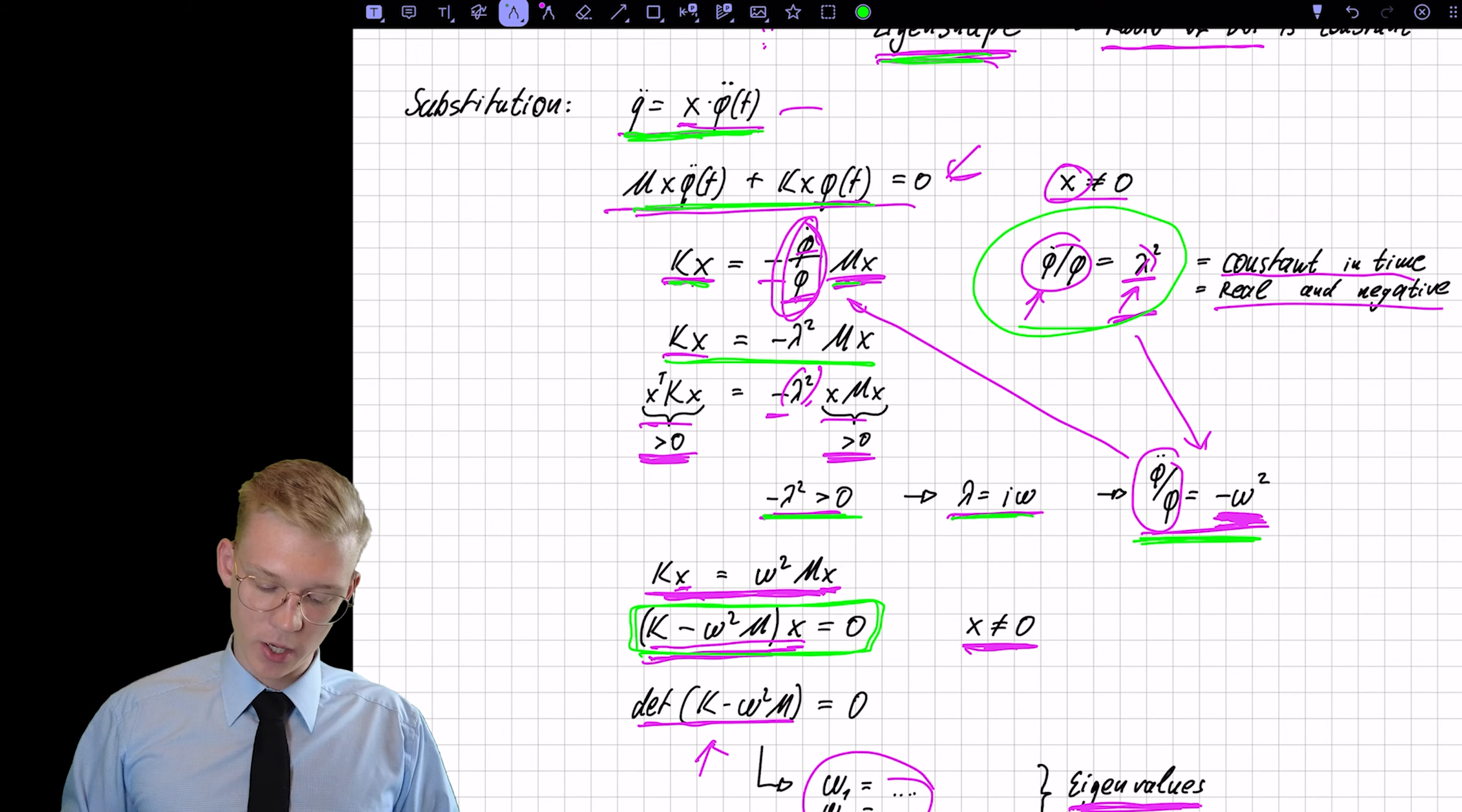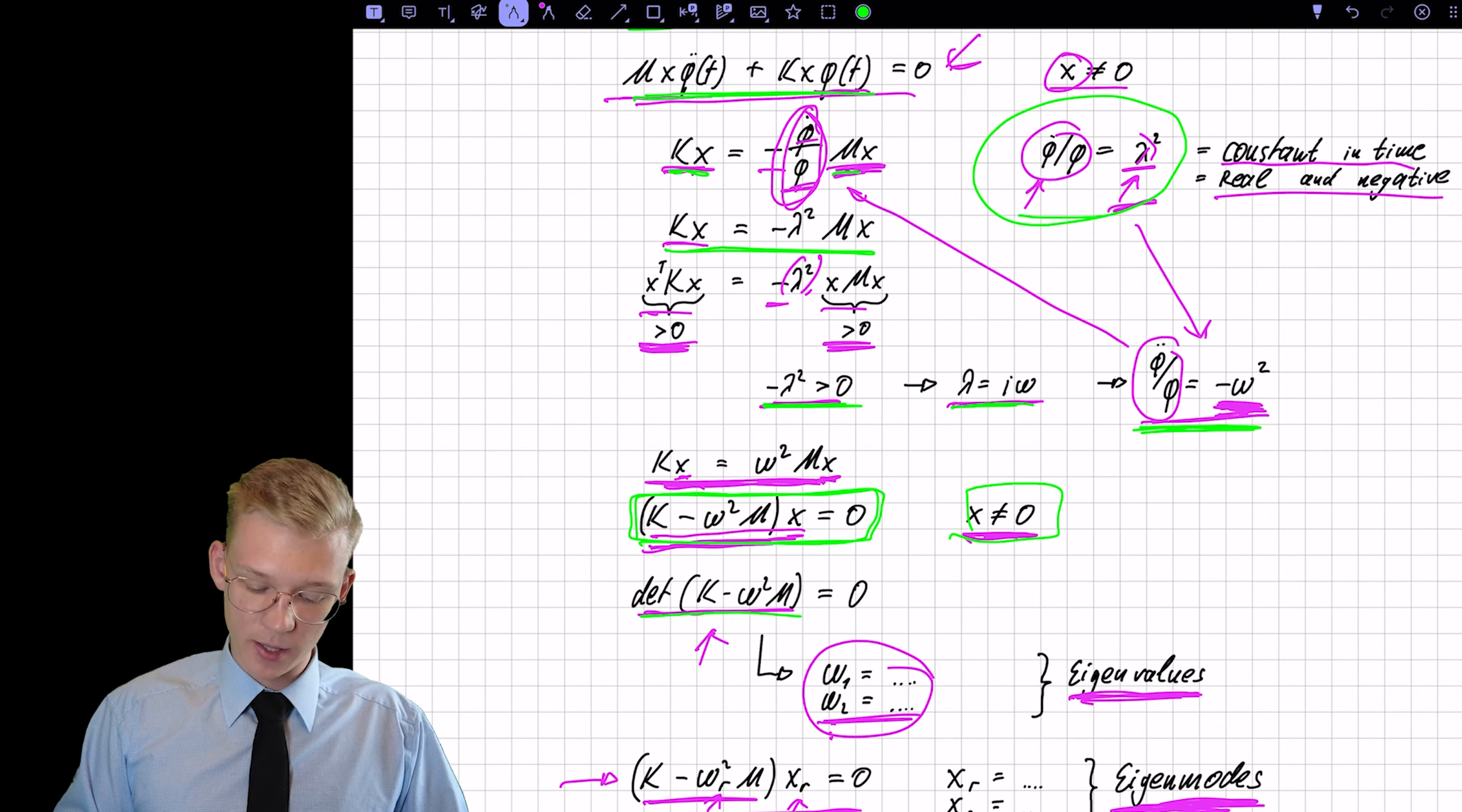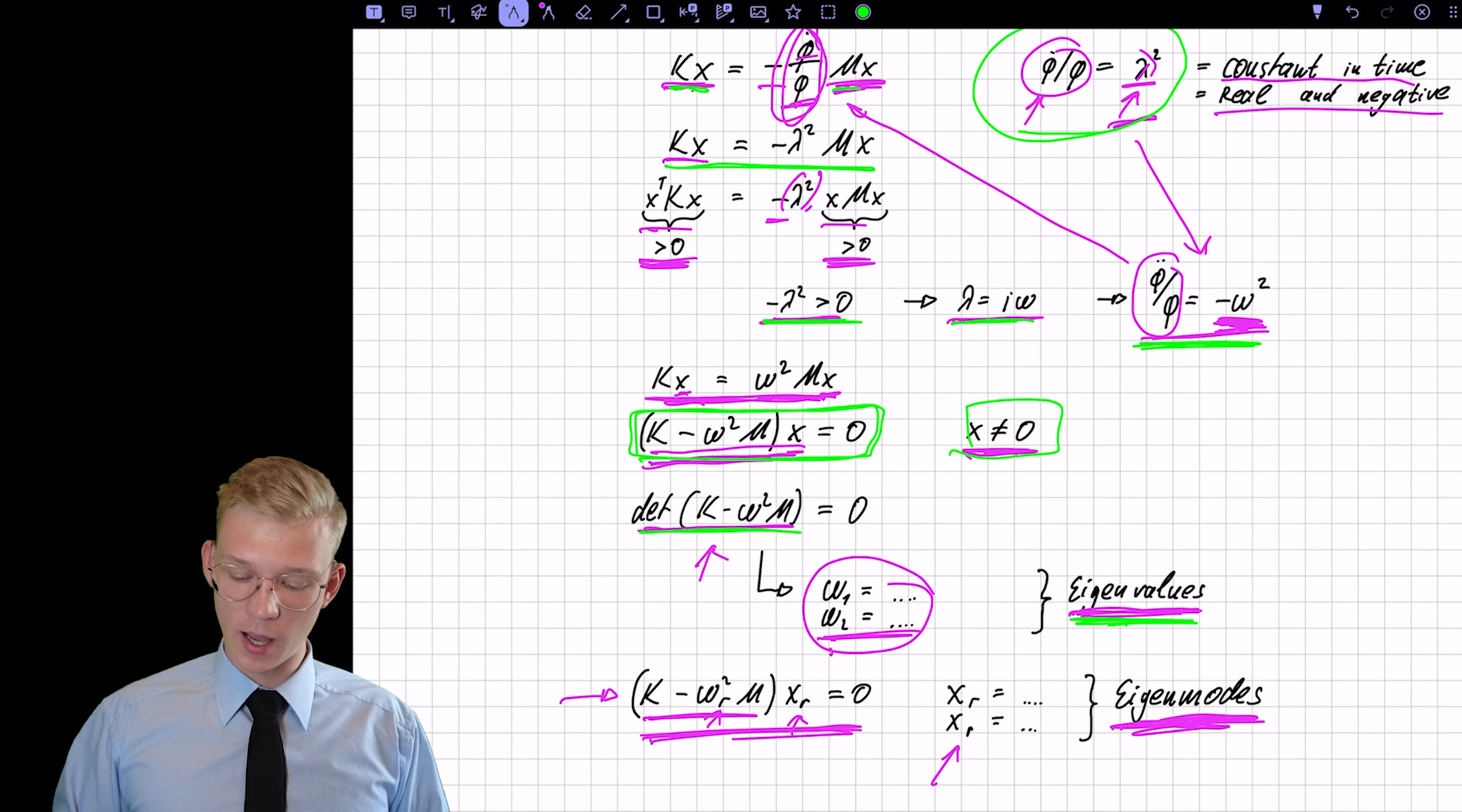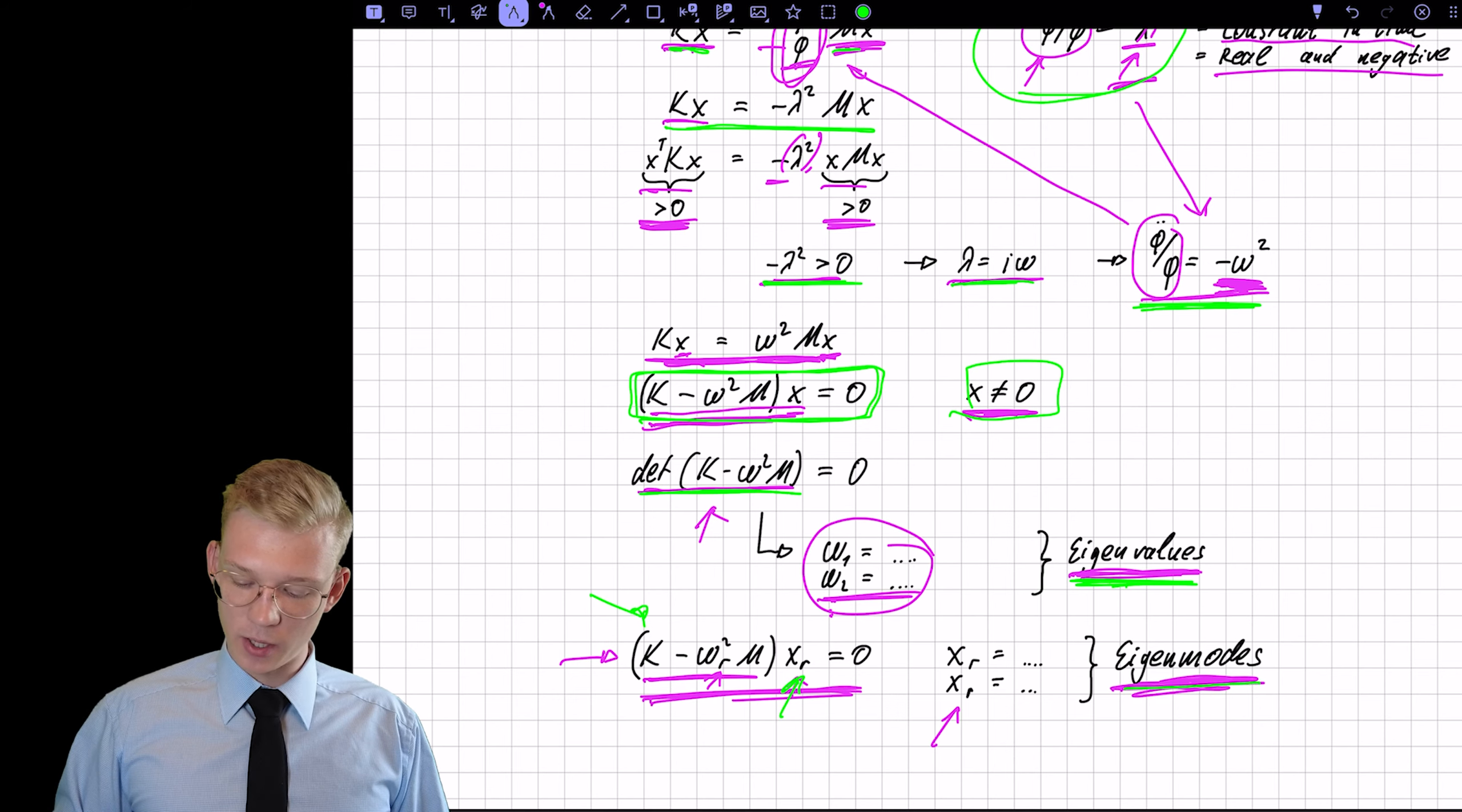And because we do not accept x0 as a solution, we needed to find the determinant. We set the determinant in such a way that it is zero, so there is no inverse. And by doing that, we found the eigenvalues. With the help of the eigenvalues, after inserting them back into the equation, we found our eigenmodes.